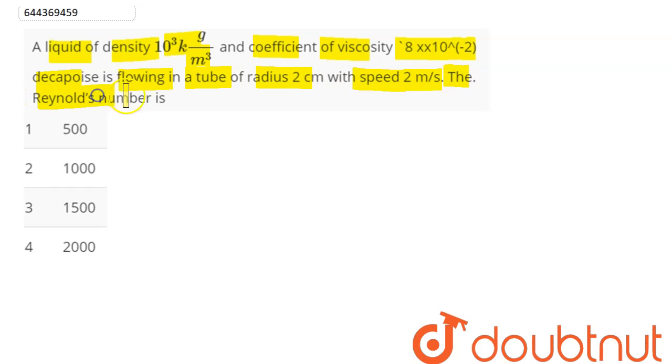So the value of Reynolds number is given as rho into V into D divided by eta, where rho is the density, V is the critical velocity, D is the diameter, and eta is the coefficient of viscosity.